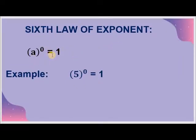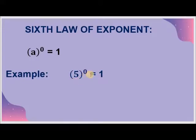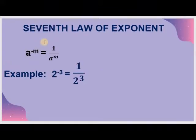The 6th law of exponent is a raised to the power 0 is equal to 1. When we have a number whose power is 0, it becomes 1. For example, 5 raised to the power 0 equals 1. Any number raised to the power 0 is equal to 1.